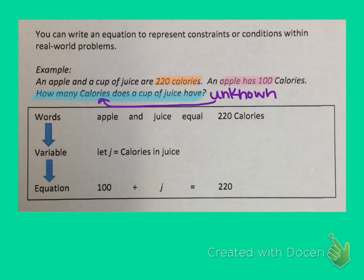Just like with writing algebraic expressions, the first step in writing an equation is to rephrase the problem with only the most important words. So we can cut out all the fluff and just write the very most basic important things. We need to know that apple and juice equal 220 calories. Those are the most basic parts of that problem. Now, like we said, when we were looking at the problem, we said the question tells us what the unknown is.